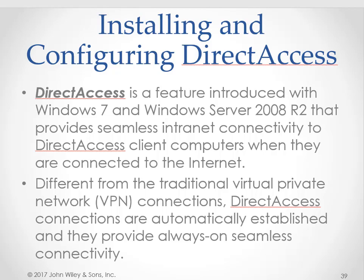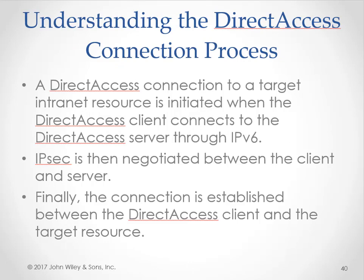Direct Access is a feature first introduced with Windows 7 and Windows Server 2008 R2. It provides seamless intranet connectivity to Direct Access client computers when they're connected to the Internet. Unlike traditional VPN connections, Direct Access connections are automatically established and provide always-on seamless connectivity. Direct Access overcomes some of the limitations of VPNs by automatically establishing a bidirectional connection from a client computer to the organization's network using IPsec and IPv6. A connection to a target intranet resource is initiated when the Direct Access client connects to the Direct Access server through IPv6, IPsec is negotiated, and the connection is established.